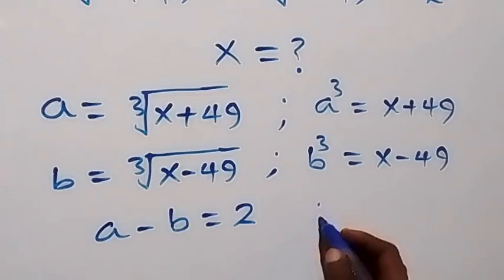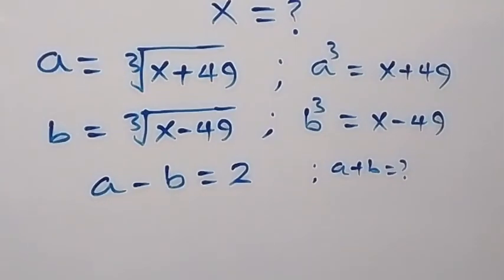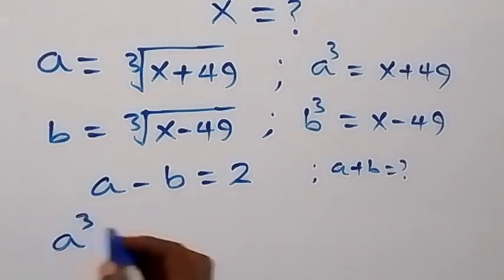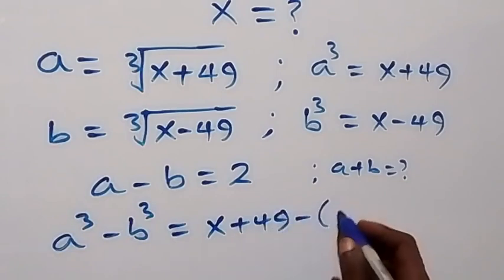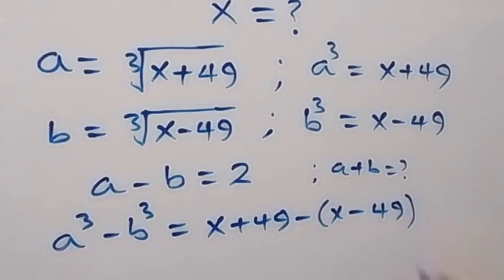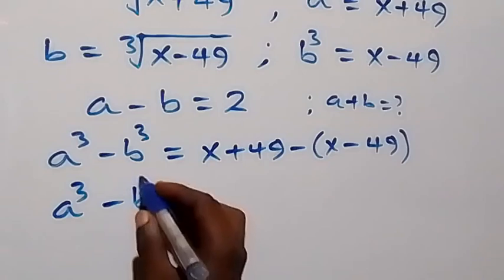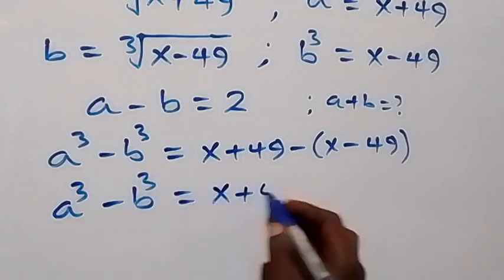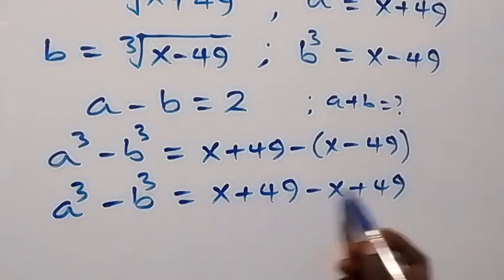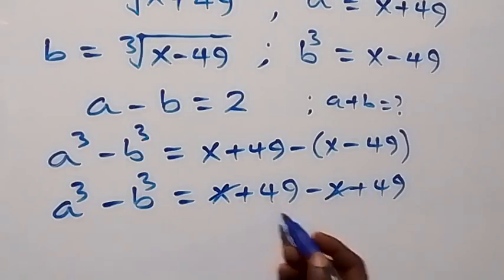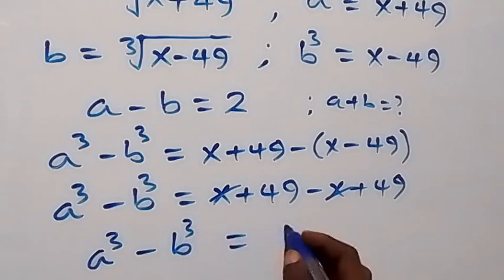Next, let's find A plus B — how to find A plus B so that we can solve simultaneously. From what we have, A raised to power 3 minus B raised to power 3 equals X plus 49 minus (X minus 49). The X terms cancel out, and 49 plus 49 gives us 98. So we have A raised to power 3 minus B raised to power 3 equals 98.